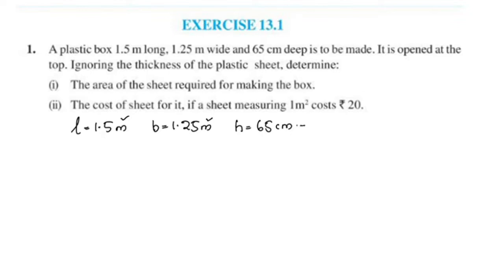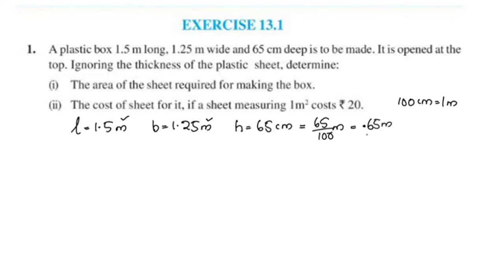We can convert the units to meters. 100 centimeters is 1 meter, so we divide 65 by 100, which gives 0.65 meters. Therefore, the height H is equal to 0.65 meters.